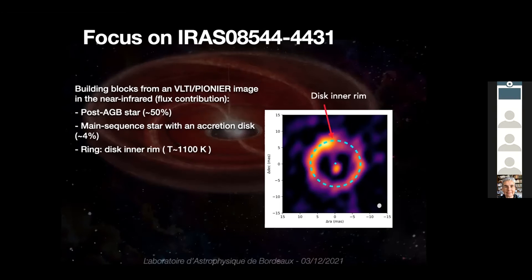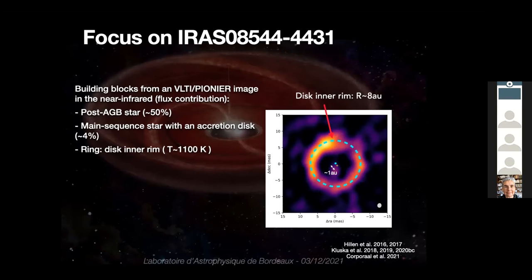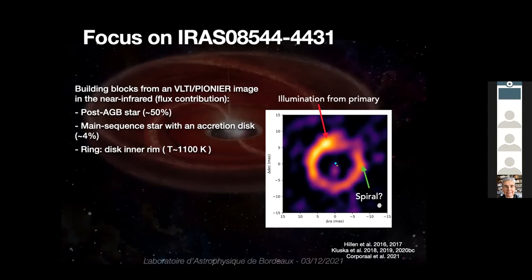We also see a circumbinary ring — the disk inner rim in dust. We can measure its temperature at around 1100 K, relatively close to the dust sublimation radius for silicates. We can remove the secondary from the image to get a better view of the circumbinary disk, which starts at roughly 8 astronomical units. There are also azimuthal asymmetries: one maximum close to the side where the post-AGB star is, likely an illumination effect from the primary, and a second maximum that could be due to disk-binary dynamical interaction — possibly a spiral from the inner binary, though the origin is not yet clear.